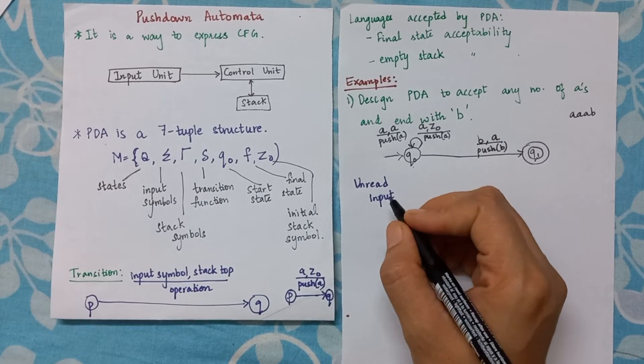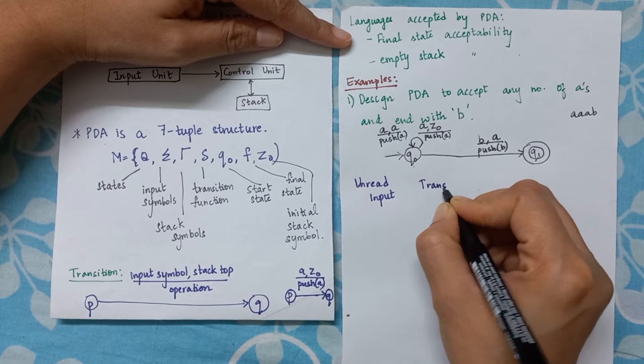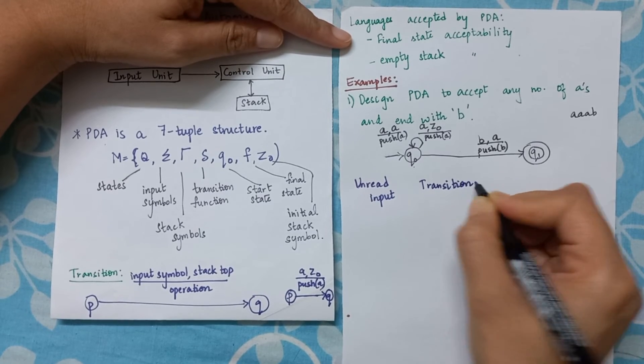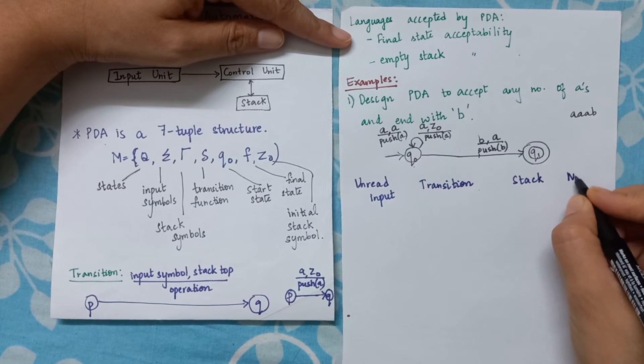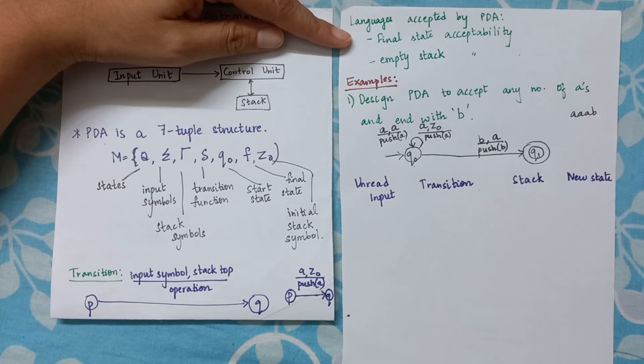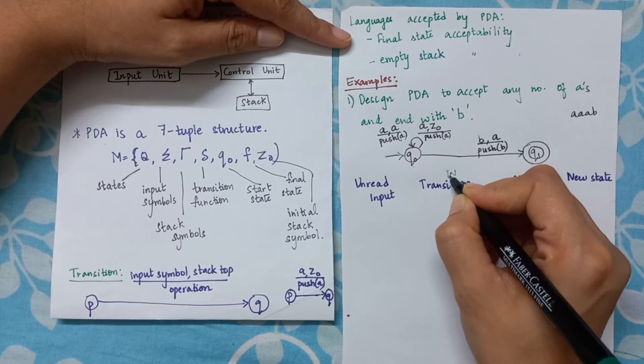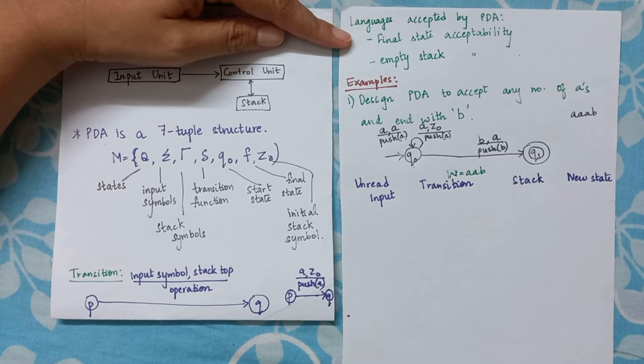So I have unread input, what transition should take place, what will be on the stack, what will be on the stack, and what is the resultant new state. Now consider we are considering w equal to aab. This is my string.